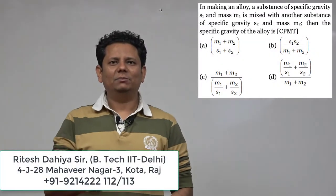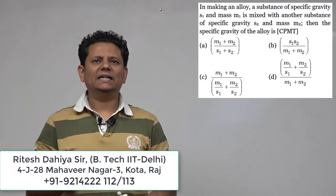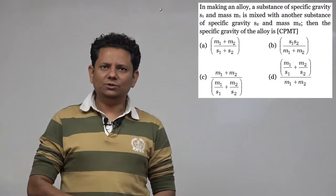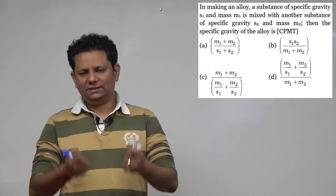The next question says: In making an alloy, a substance of specific gravity s1 and mass m1 is mixed with another substance of specific gravity s2 and mass m2. Then the specific gravity of the alloy is...